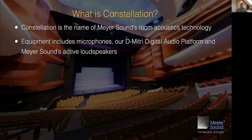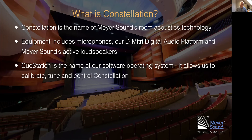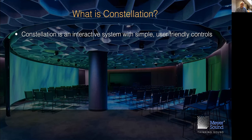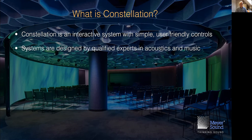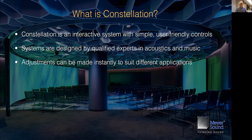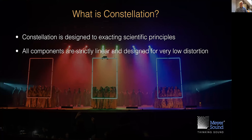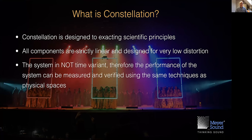Constellation is the name of Meyer Sound's room acoustics technology. Equipment includes microphones, our Dimitri digital audio platform, and Meyer Sound's active loudspeakers. CueStation is the name of our software operating system — it allows us to calibrate, tune, and control Constellation. Calibration and tuning is performed by Meyer Sound experts as part of any Constellation package. Constellation is an interactive system with simple, user-friendly controls, and is designed to exacting scientific principles. All components are strictly linear and designed for very low distortion. The system is not time-varying — this is very important — therefore, the performance of the system can be measured and verified using the same techniques as physical spaces.